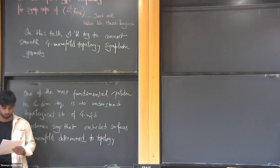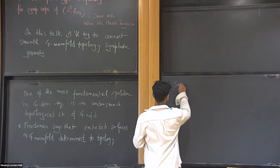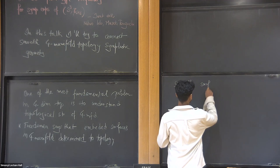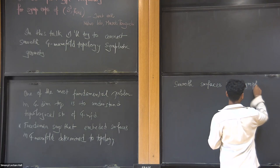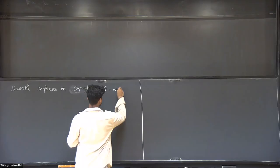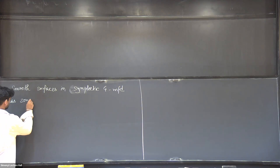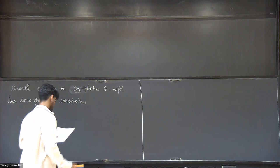We'll mostly understand how surfaces smoothly sit inside four-manifolds — that's the topological side of the story. Now let's talk about the symplectic story. By 'surface' I mean a two-dimensional manifold inside a four-manifold. Smooth surfaces in a symplectic four-manifold have some particular constraints.